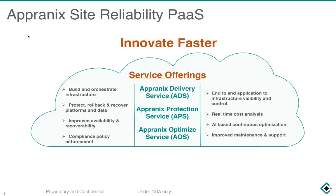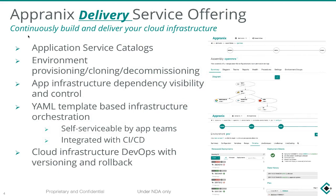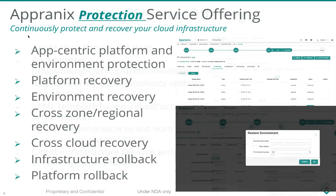We have three different service offerings: delivery service, protection service, and optimization service. The delivery service is all about the ability to continuously build and deliver your cloud infrastructure for any application. We have an application service catalog capability, but the key difference is how we combine it with simple YAML template-based infrastructure orchestration underneath, enabling you to do infrastructure DevOps with versioning and rollback.